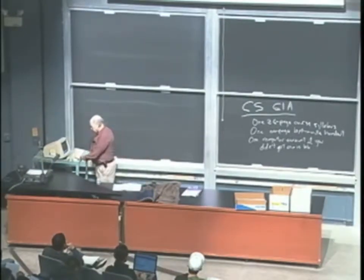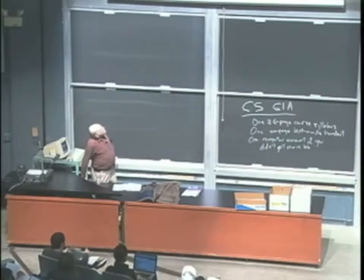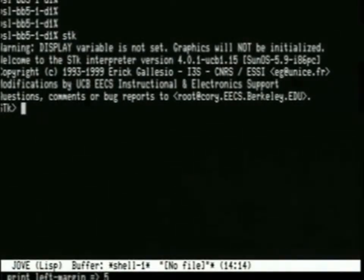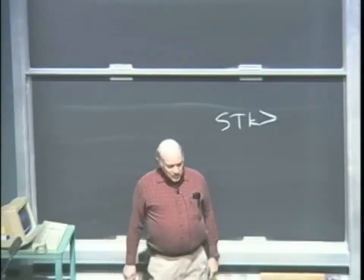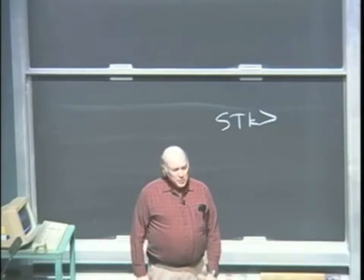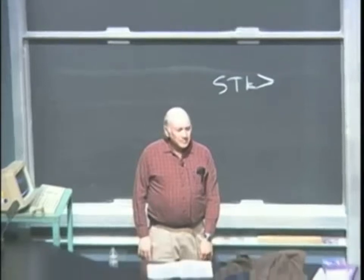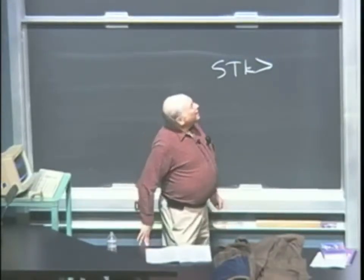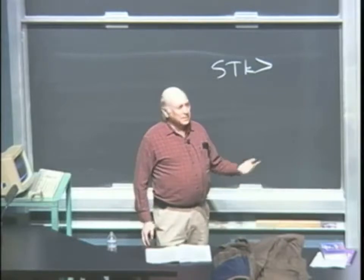I'm going to just jump in and show you Scheme. So I say stk here at the Unix shell, and it types a bunch of stuff, most of which you can't read, and it says stk greater than — of which you can probably only see the greater than. So off to the left of that it says stk. That's Scheme's prompt. STK is a particular implementation of the Scheme programming language. Scheme is a dialect of Lisp. Lisp is the second oldest computer programming language that's still in use, so it must have had some good ideas in it. And Scheme is a descendant of Lisp that has really been tuned up to be beautiful and sleek and elegant.